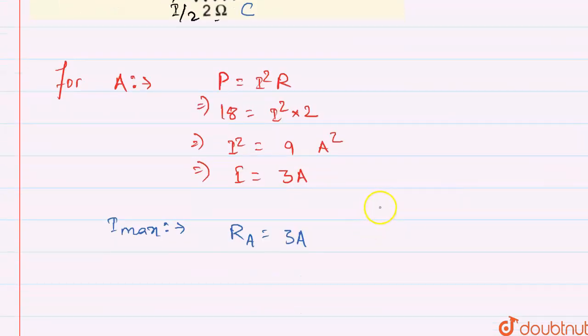Then B and C - the current through B and C will be 3 upon 2, that is 1.5 ampere. These are the currents through the resistors.